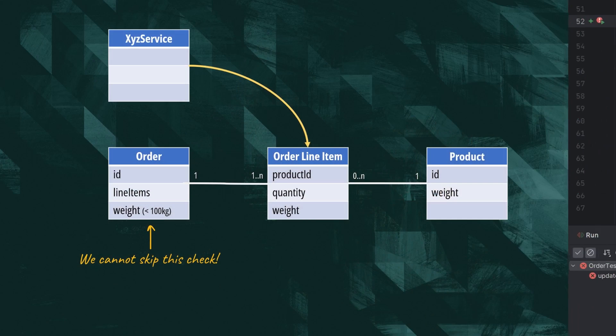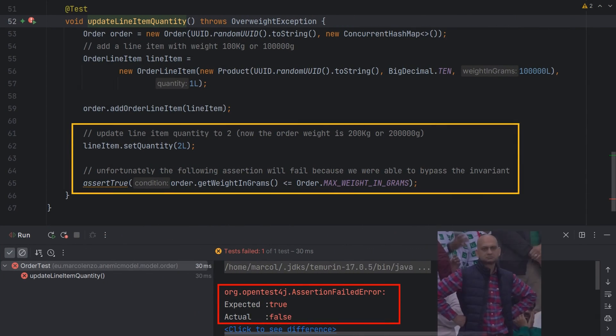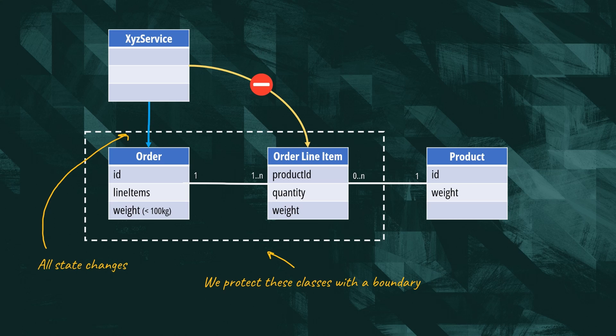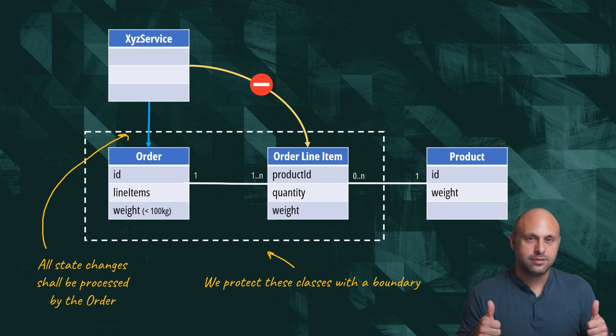We can easily confirm this hypothesis by writing a test. As we can see, the test fails. It becomes evident that to maintain the integrity of our model, only the order itself should be allowed to modify its line items. To further enhance encapsulation, no other object should directly hold references to line items. The order maintains ownership and regulates access to its associated line items. We just derived the concept of aggregate.